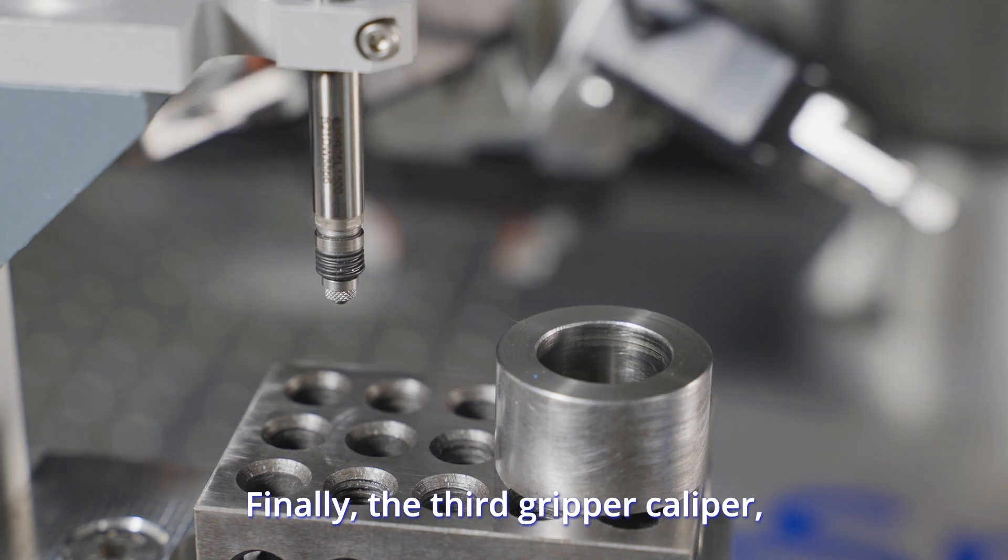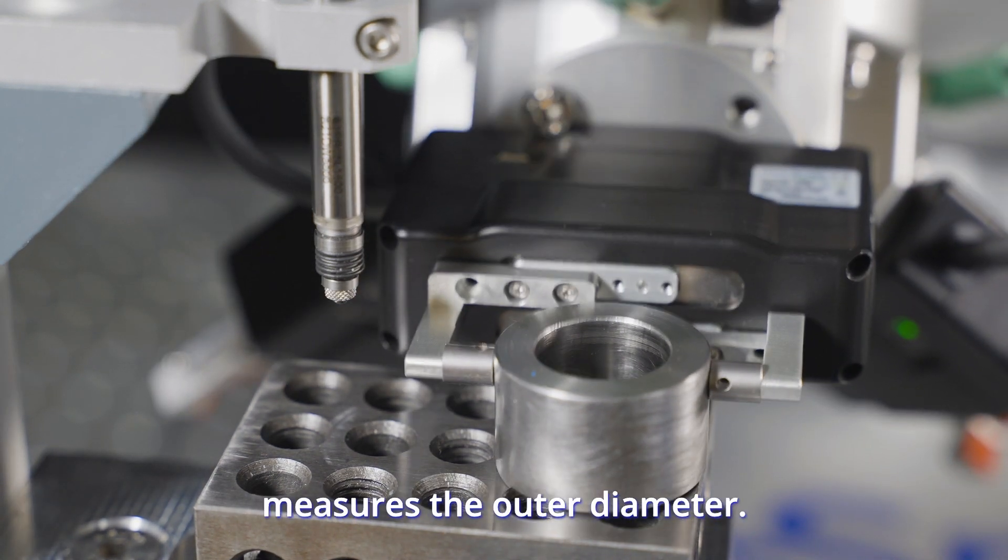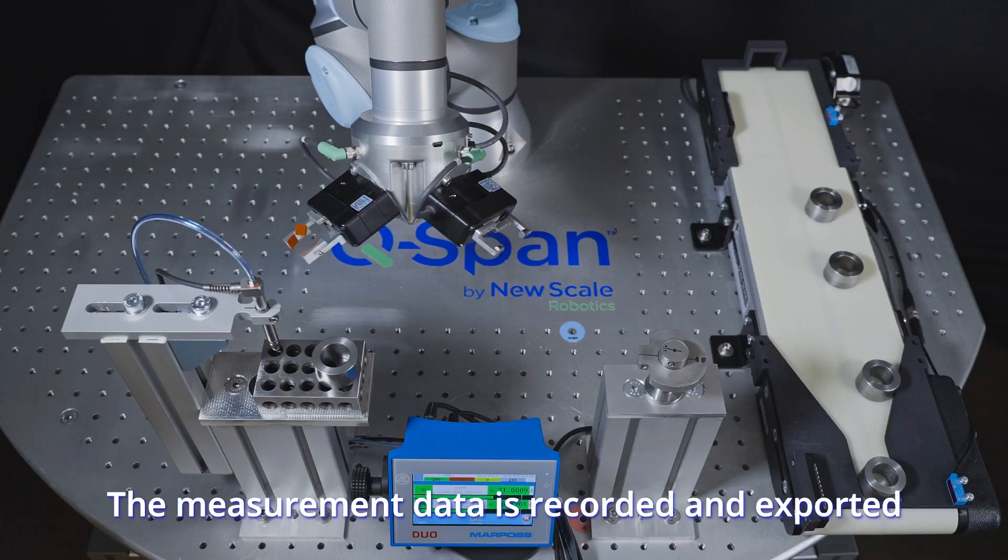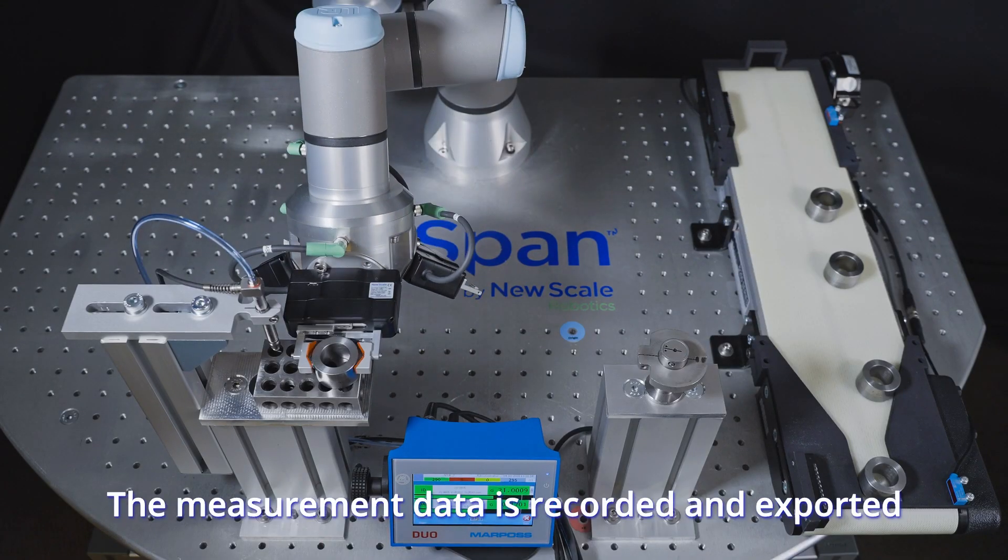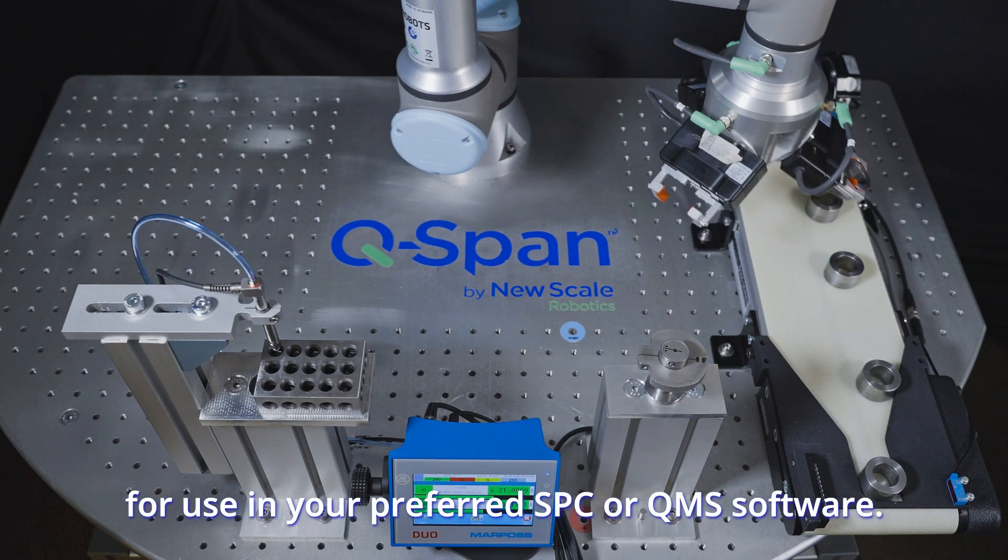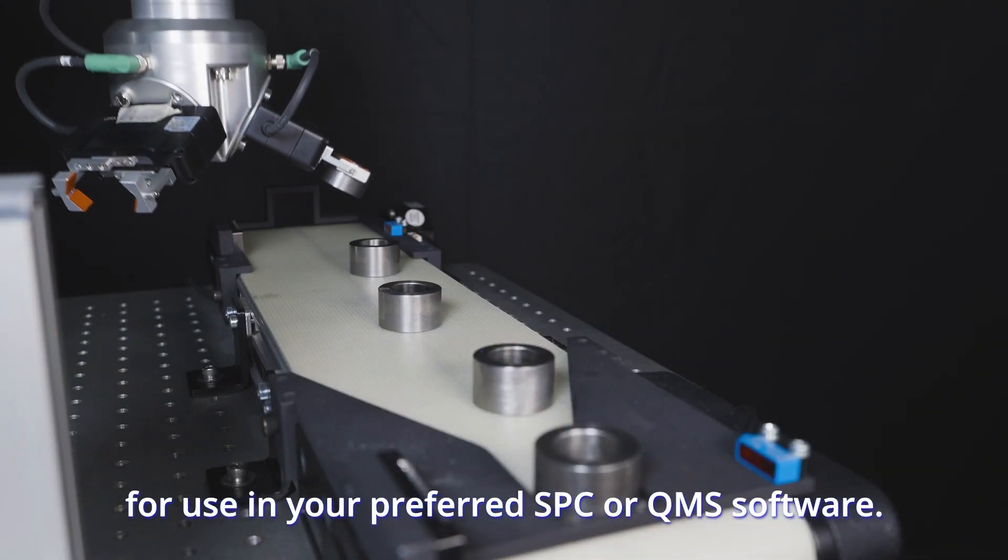Finally, the third gripper caliper using metrology fingertips measures the outer diameter. The measurement data is recorded and exported from all three tools for use in your preferred SPC or QMS software.